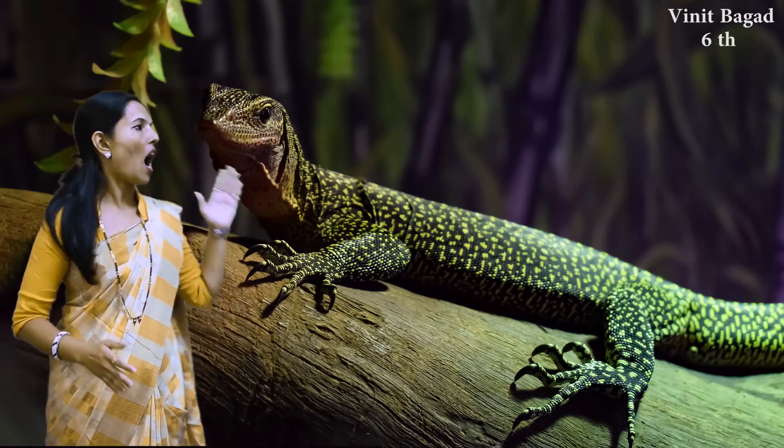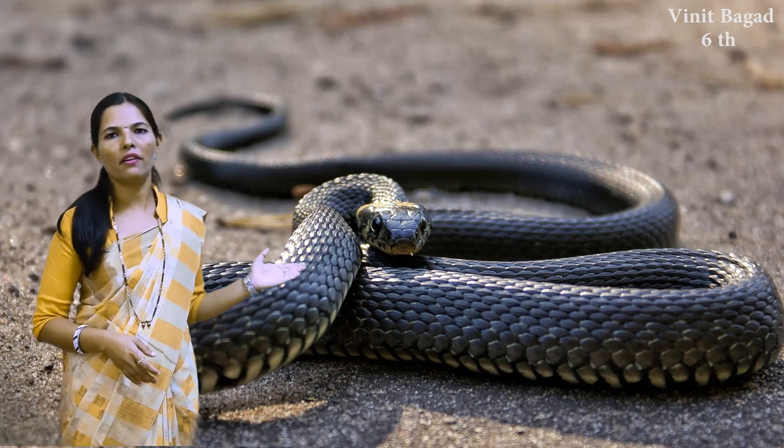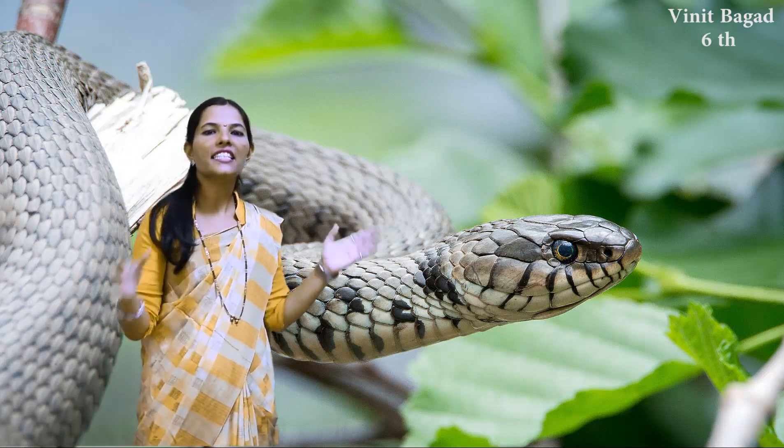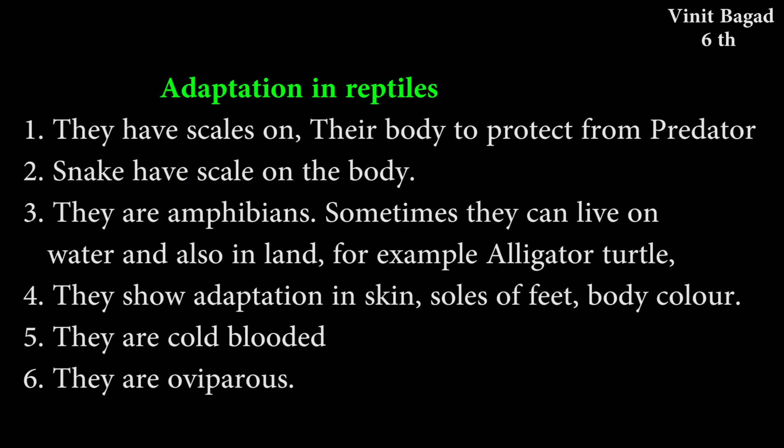The next reptile is the snake. You can observe the body of a snake. The adaptations in reptiles are: first, they have scales on their body to protect from predators. Some may be amphibious — they can live on water as well as on land. They show adaptation in skin, soles of feet, and body color. They are cold-blooded. Most of them are oviparous. These are all the adaptations in reptile animals.